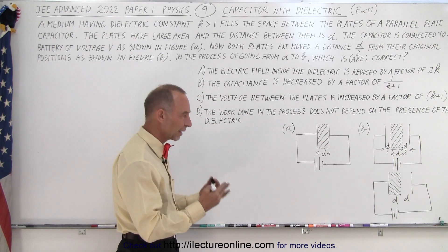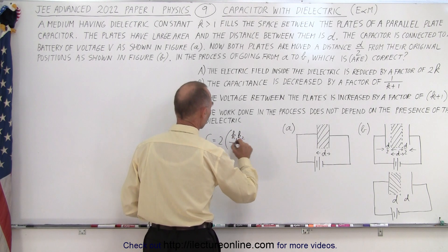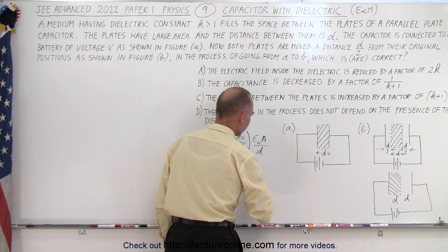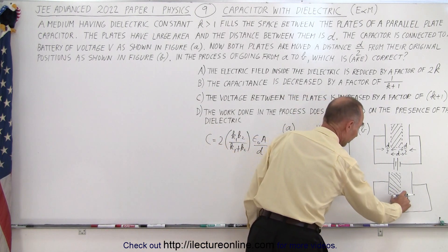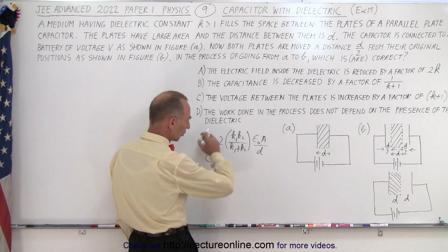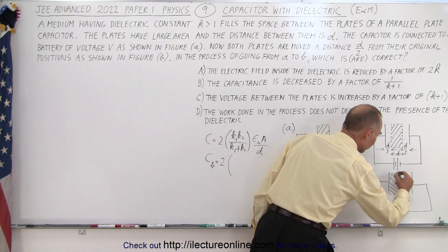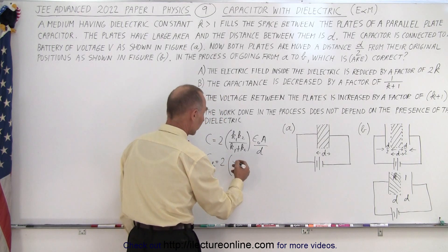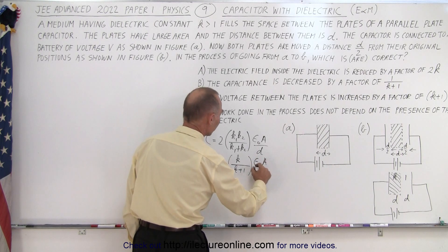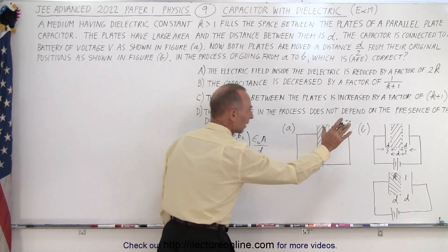When you have multi-layers of dielectric in a capacitor, the capacitance is equal to two times the product over the sum: (k₁·k₂)/(k₁+k₂) × ε₀A/d. In our case the total width is 2d, so C_b equals two times k·1/(k+1) × ε₀A/(2d), because one layer is air (dielectric constant 1) and the other is k. The two's cancel out, giving C_b = k/(k+1) × ε₀A/d.